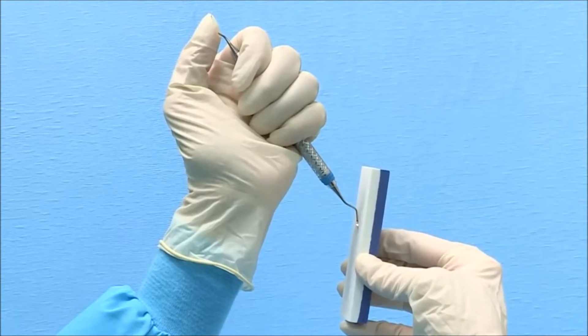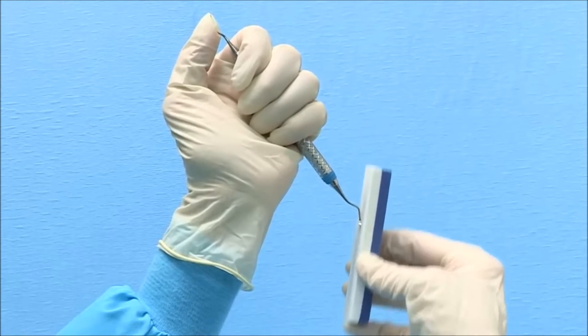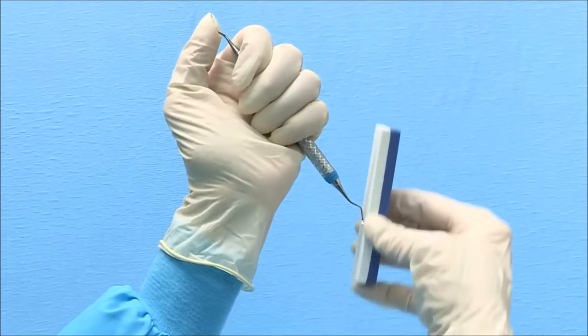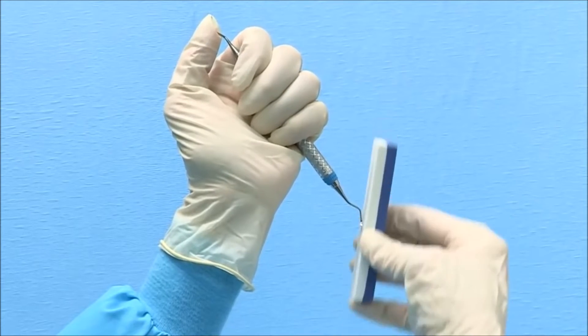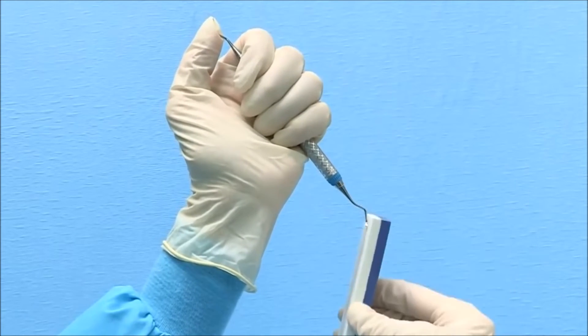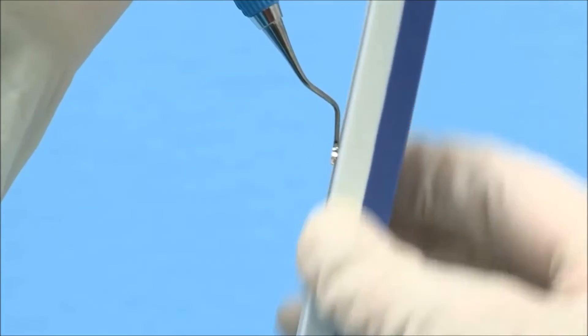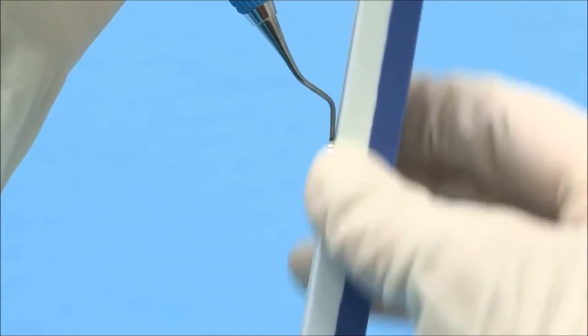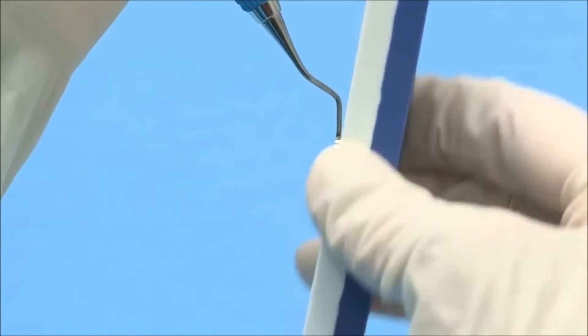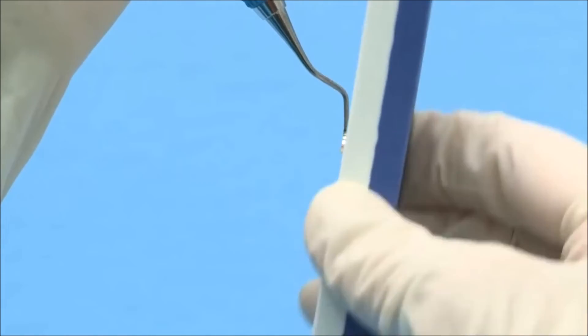Initiate sharpening in a fluid up and down motion starting at the heel third of the blade and slowly progress by moving the stone to the middle third and then finally the toe third. Maintain a continuous up and down motion using long strokes and moderate pressure. Finish on a downward stroke.